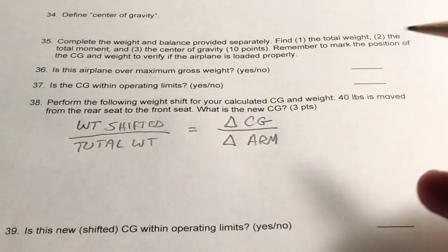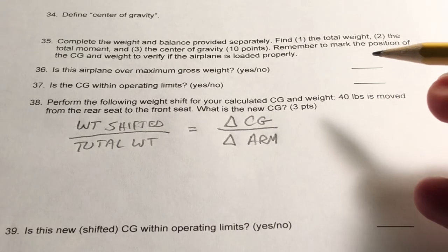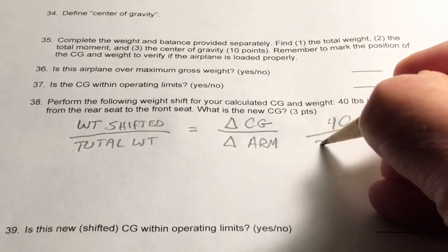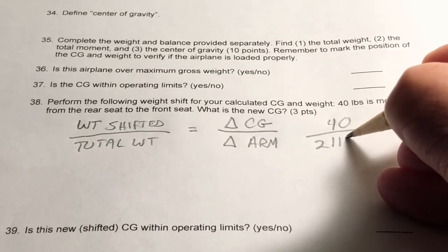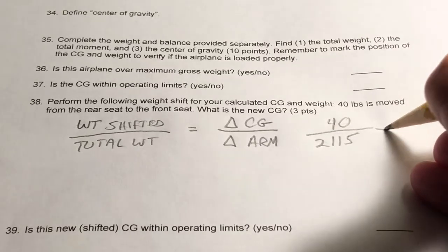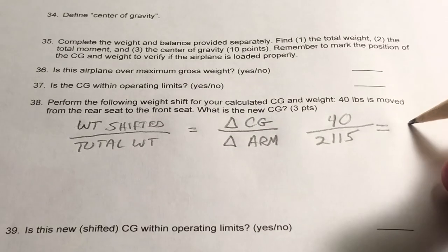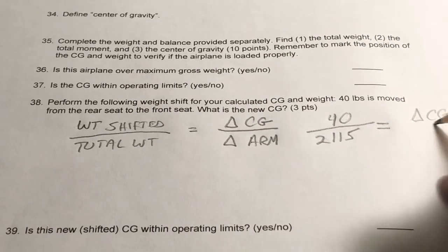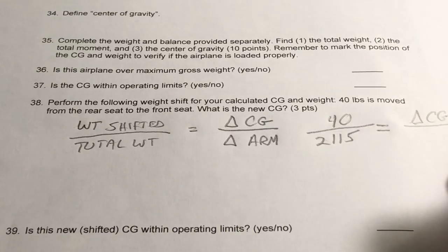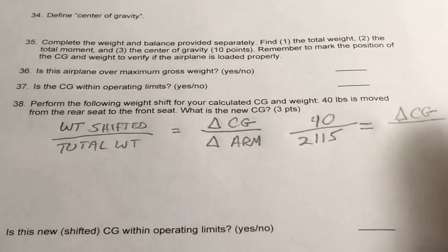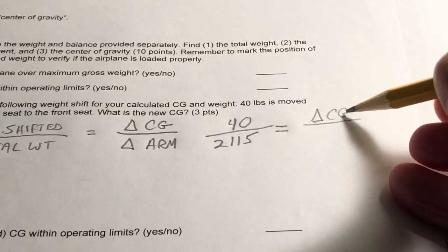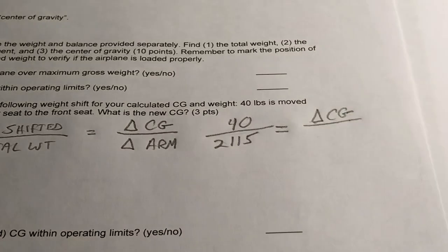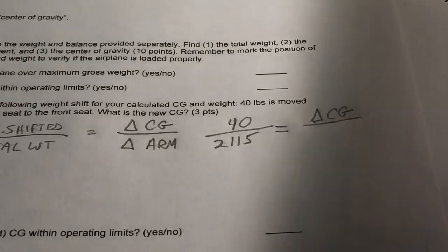We're going to be moving 40 pounds. So 40 pounds divided by 2,115, which is the total weight of the airplane, equals the change in CG. So that's what we're interested in, change in CG. And we're going to divide the change in CG by the change in the arm.